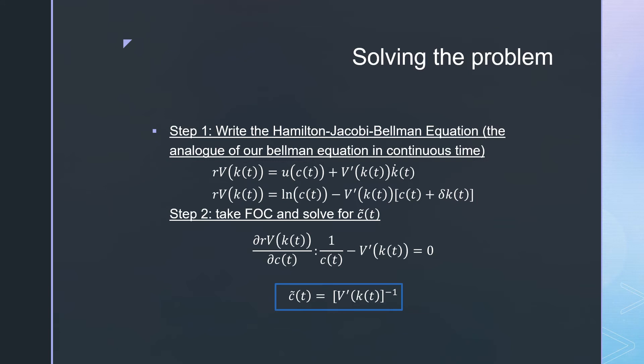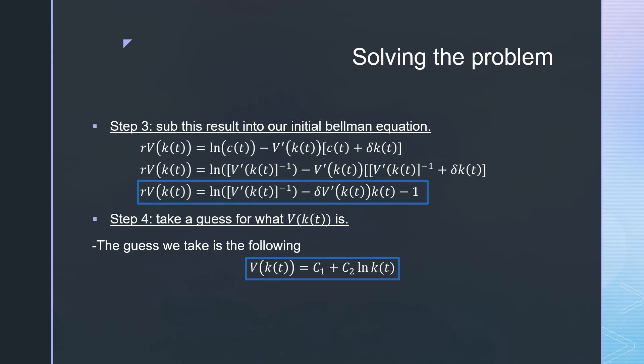Next, we're going to take our first order conditions with respect to c_t here, and then we're going to solve for c̃_t. We get the following: our intermediate policy function is going to be equal to V'(k(t)) inversed.